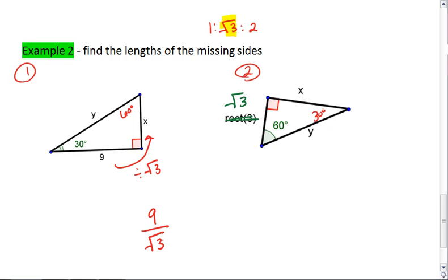Right now, we have 9 square root of 3. We're going to get rid of that square root in the denominator by multiplying by square root of 3 over square root of 3. This is the same as just multiplying by 1, so that's all right. What we get is 9 square root of 3 all over square root of 3 times square root of 3, which is just 3.